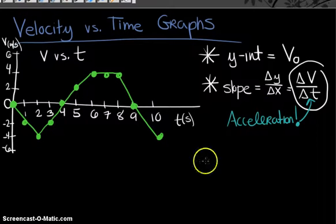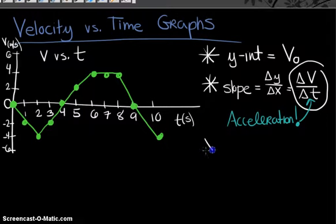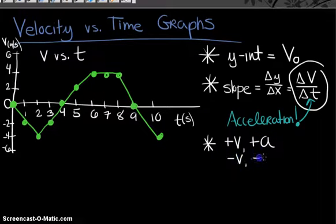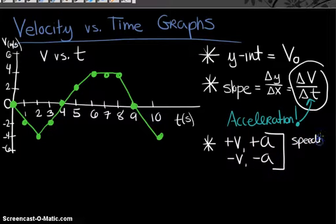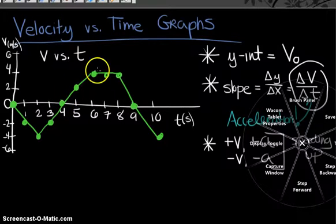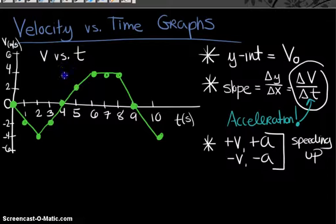We also discussed that when you have a positive velocity and a positive acceleration, you have speeding up motion — the same applies with a negative velocity and a negative acceleration. Looking at the example graph from the four-second to six-second clock reading, all velocity values are positive and the slope is also positive, meaning acceleration is positive, confirming speeding up motion.